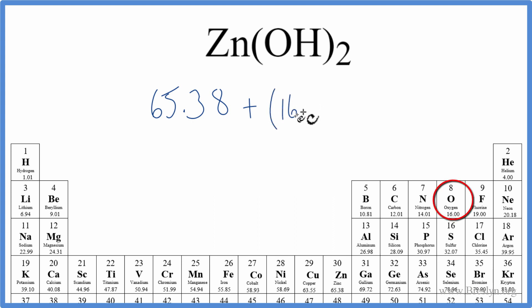Oxygen on the periodic table, 16.00 grams per mole plus the hydrogen, that's 1.01 grams per mole. And then we'll multiply that by 2.